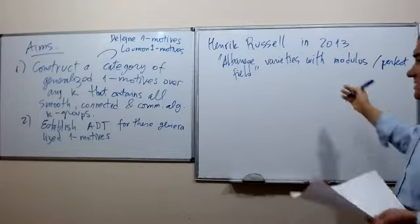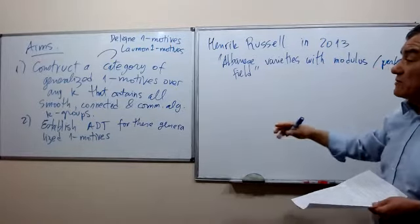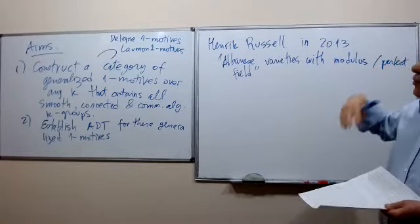His paper is excellent and very interesting, but I'm only interested in a small part of it — his definition of 1-motives — because I'm thinking about duality theorems. He didn't do anything about arithmetic duality theorems. The arithmetic duality theorems already exist for the Deligne 1-motives by results of Harari and Szamuely.